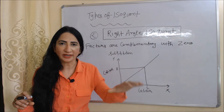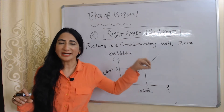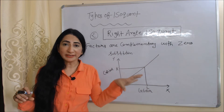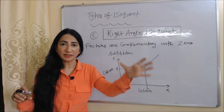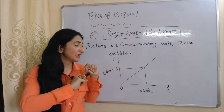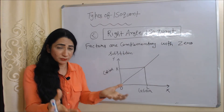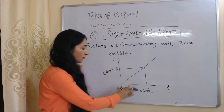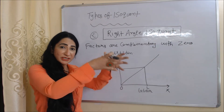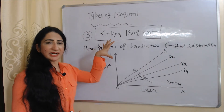The second type is the right-angle isoquant. According to this, factors are complementary with zero substitution. To produce a particular amount of output, we need both factors of production and cannot substitute one for the other. In the diagram, we need both OL amount of labor and OK amount of capital to produce a particular output.